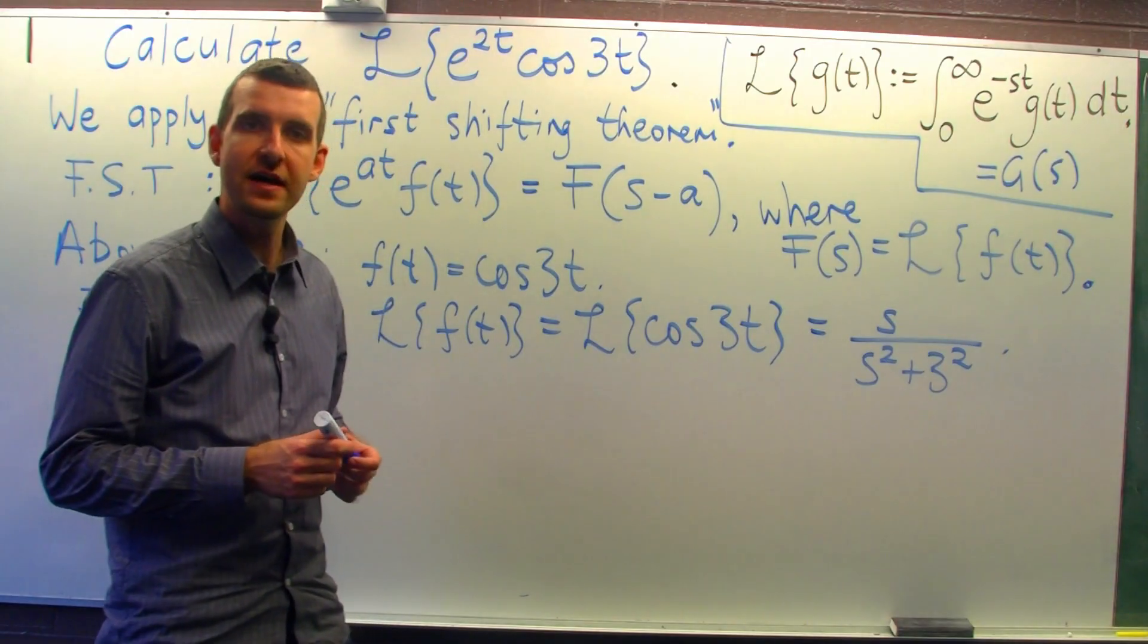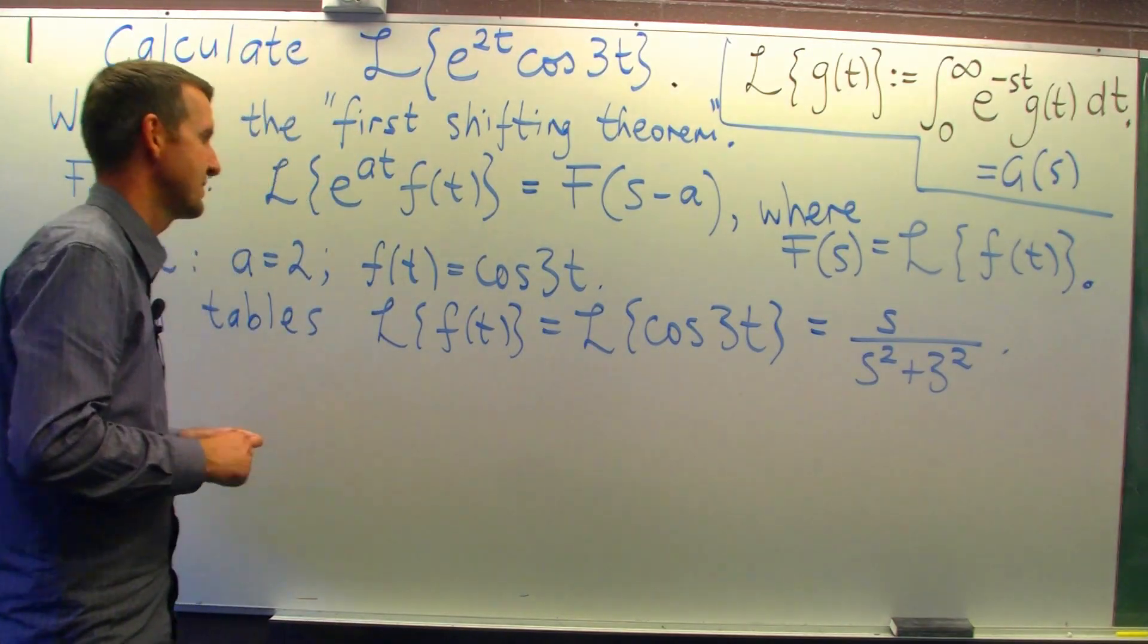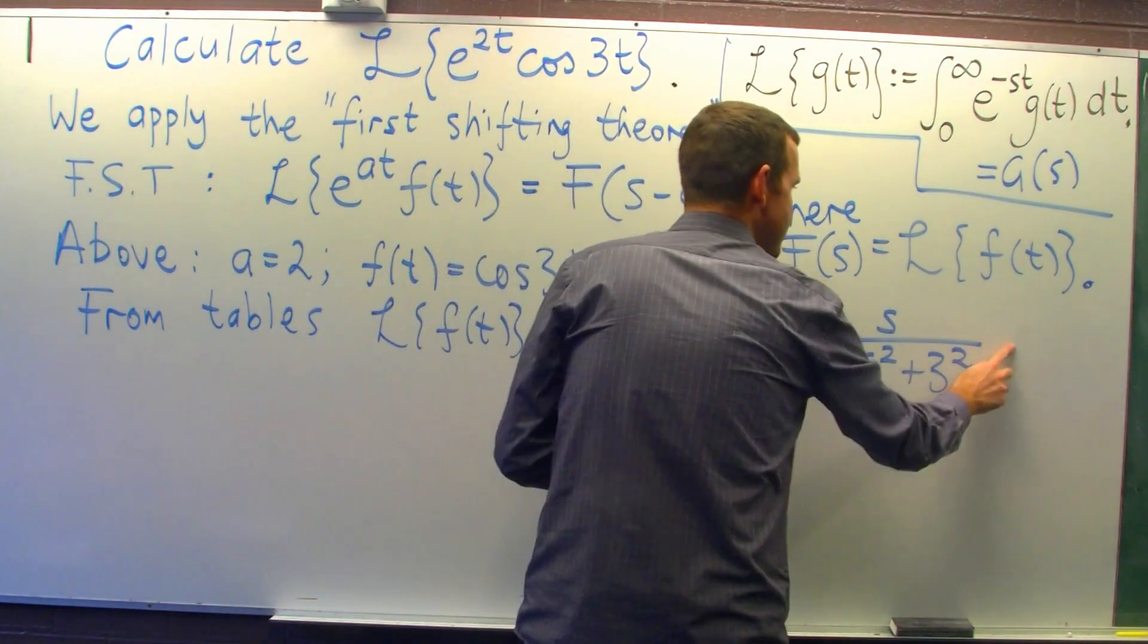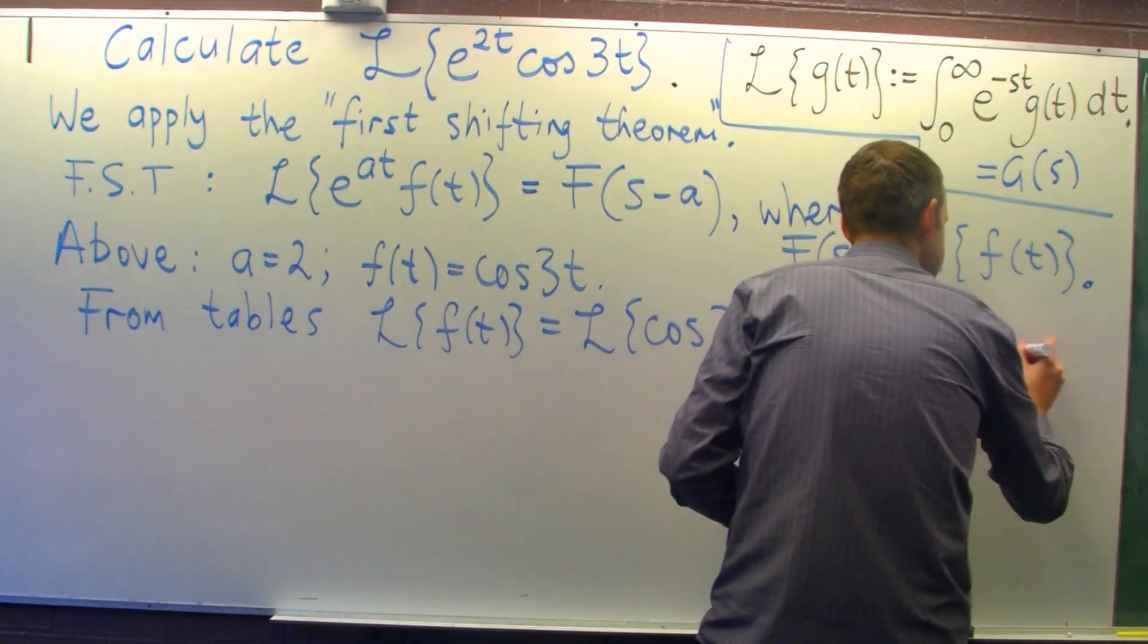Okay? It's s over s squared plus 3 squared. Alright? So we've found this. Alright? So let me just write this as big F of s.